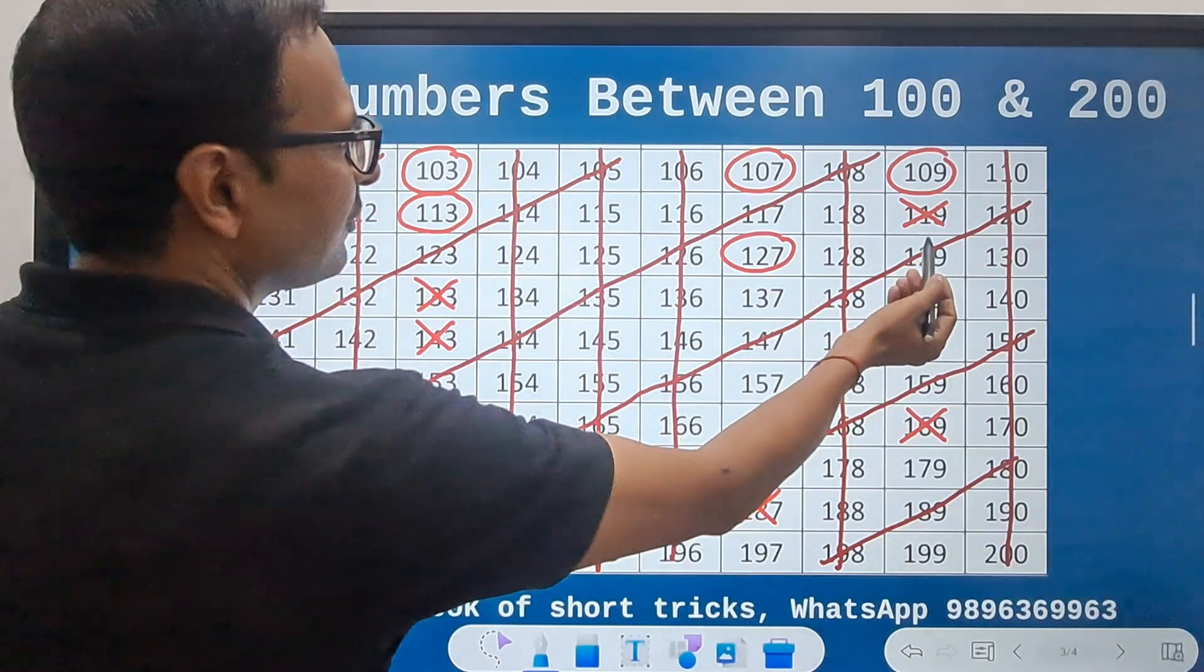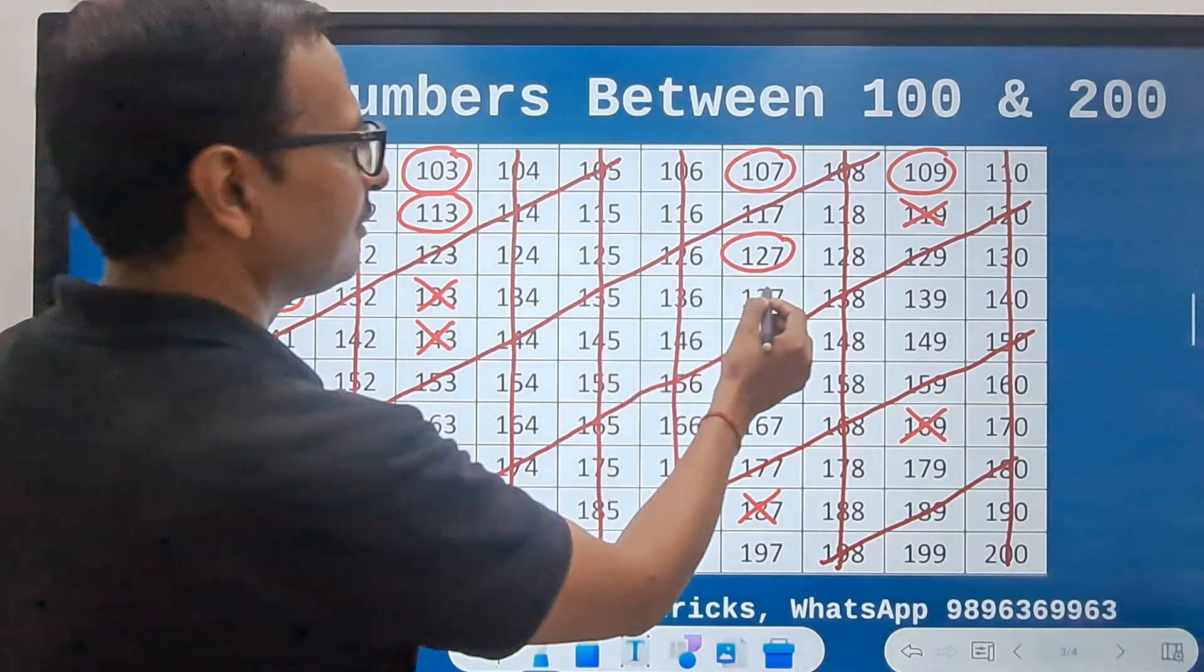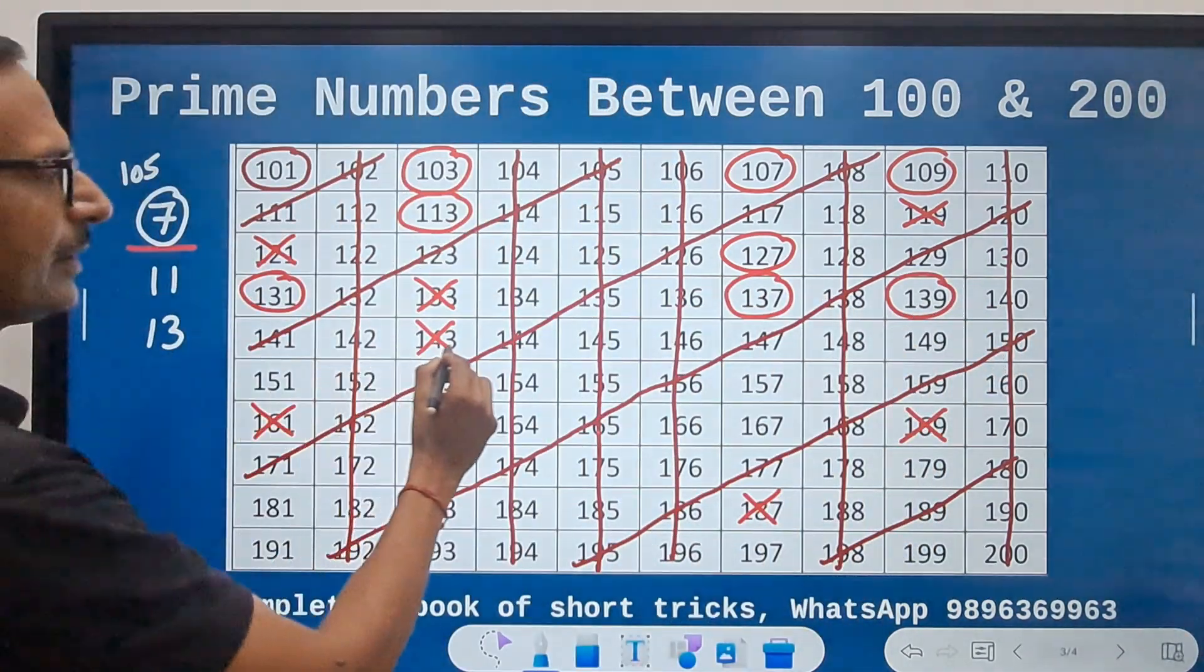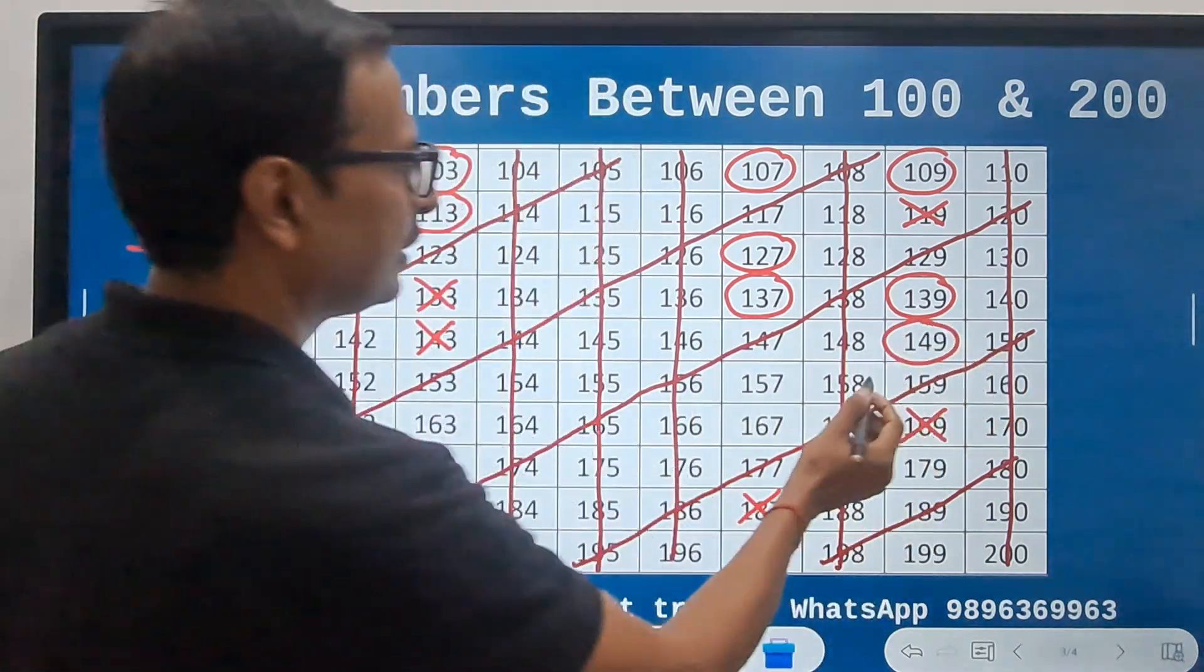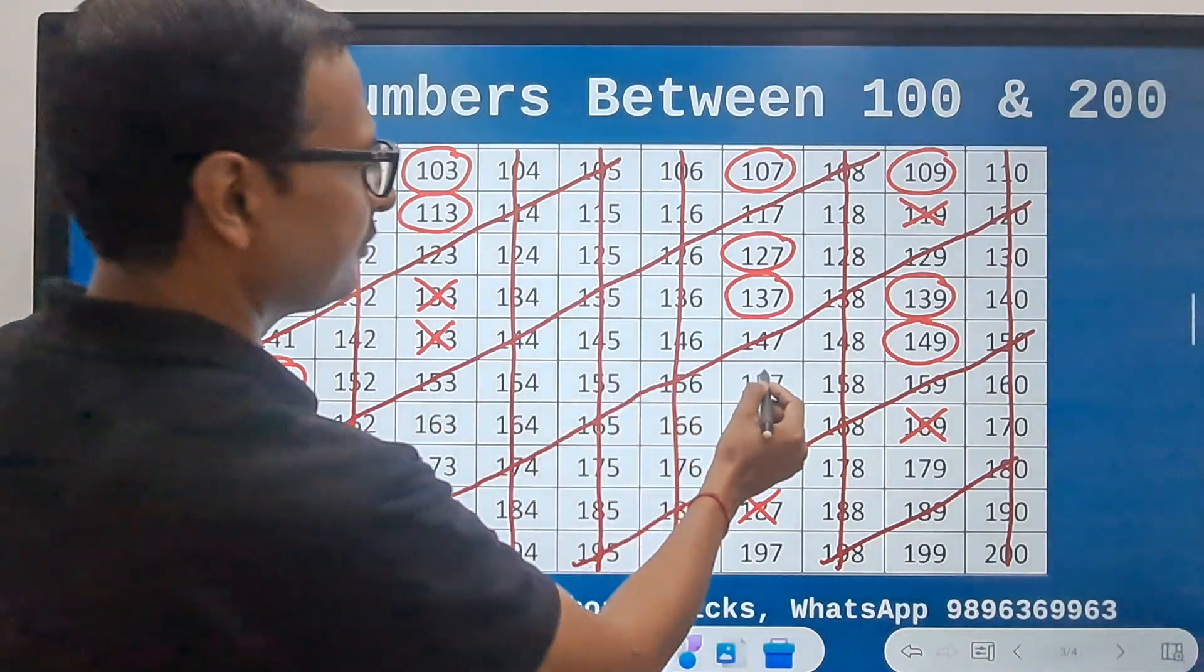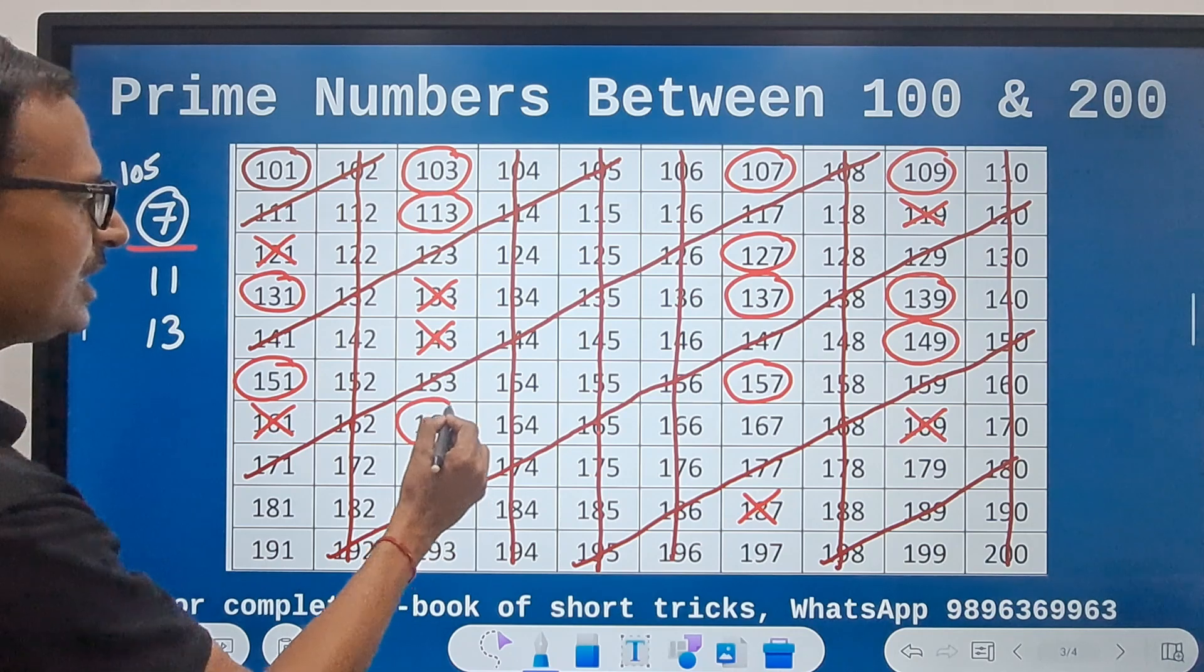And so 128, 129, 130, 131 is the next prime. And then 137, 139, and then we have the number 149 and 151, followed by 157, and then 163, 167.